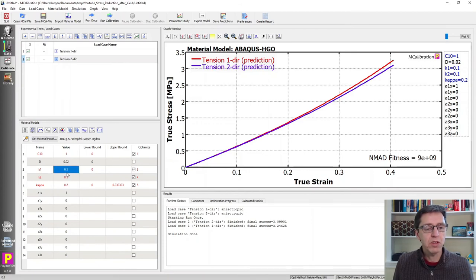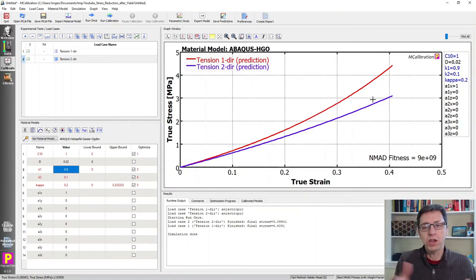If I increase K1, which is the stiffness of the fiber, if I make it 0.9, and I run this, we'll see that the difference between the two directions increases, obviously, because the fibers now contribute even more, in this case, in the one direction. So that's very cool.